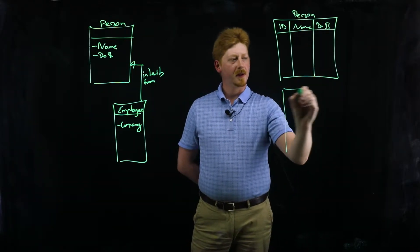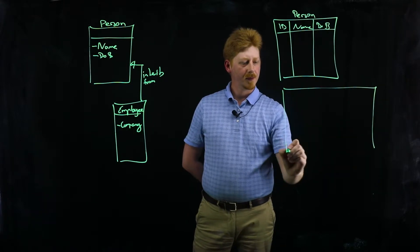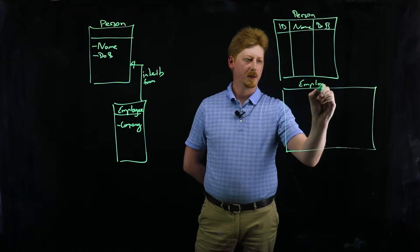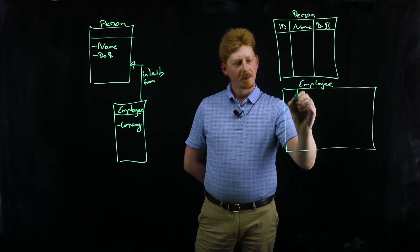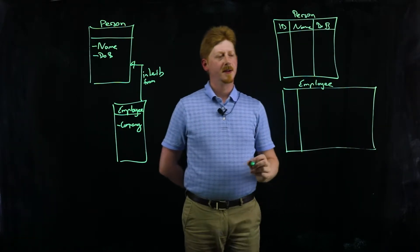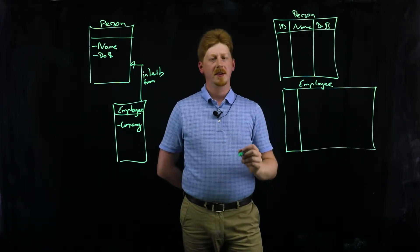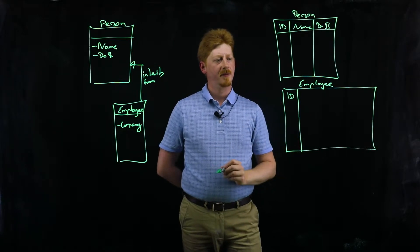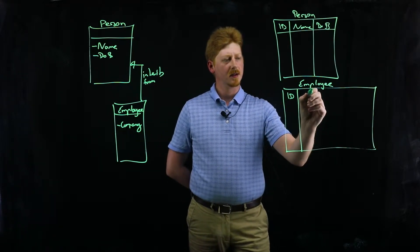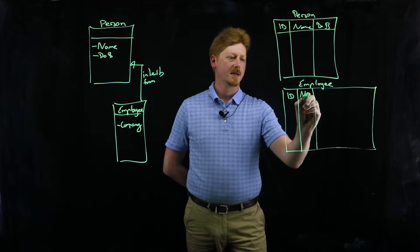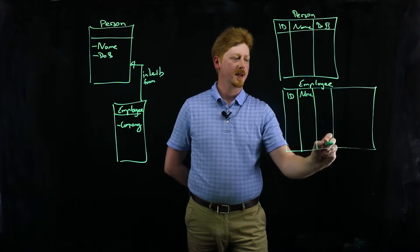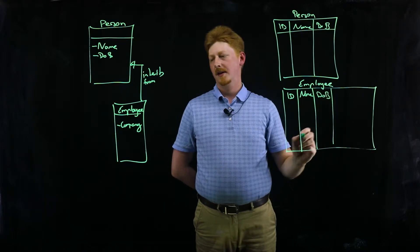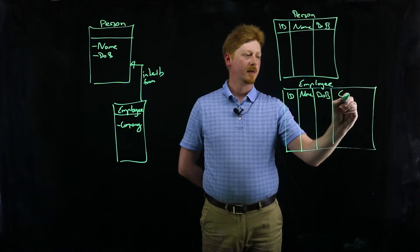And we also end up with a table for the employee. This table gives us a complete view of what an employee actually looks like. So it will hold the ID, the two columns name and date of birth, and it will have one column for the company name.